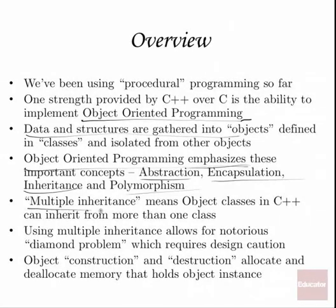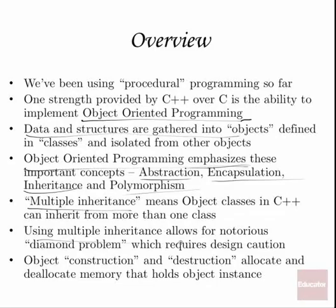C++ gives you multiple inheritance. Some other languages don't, some other languages do. But it basically means an object can inherit. In object-oriented programming, everything has a class which can inherit from other classes. But in C++, you can inherit from more than one parent class. With multiple inheritance, it allows for various things. You can use different parts from different things, but you also have to be worried about the diamond problem, which we'll talk about later. And we're going to talk about construction and destruction of objects, which allocate and deallocate memory when necessary.